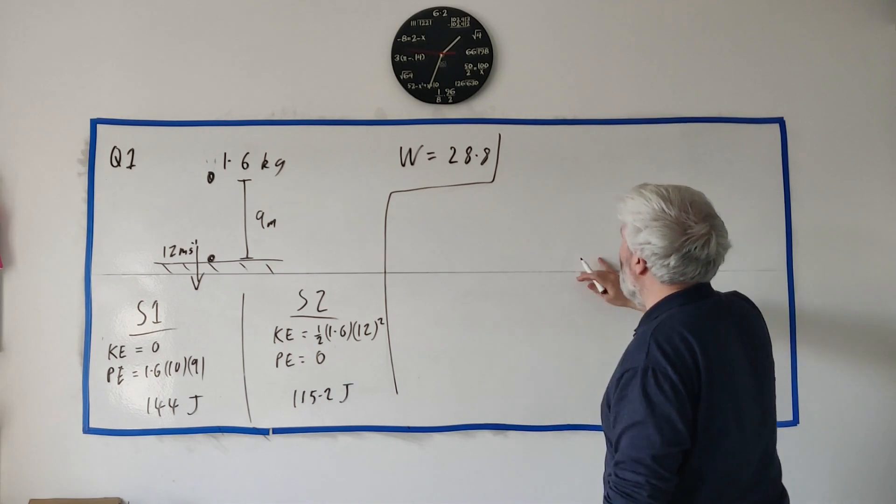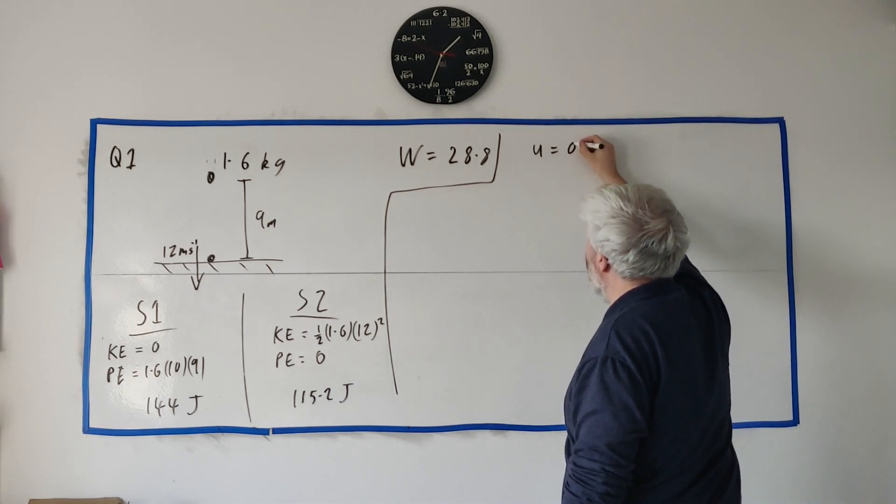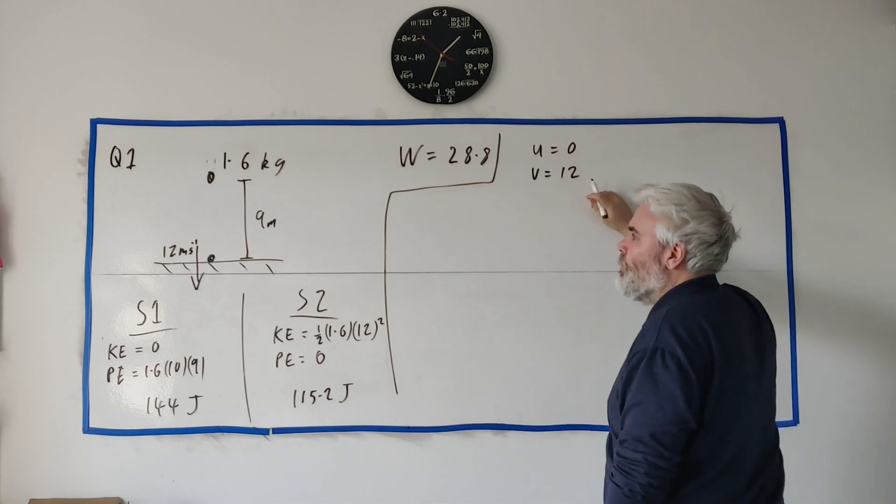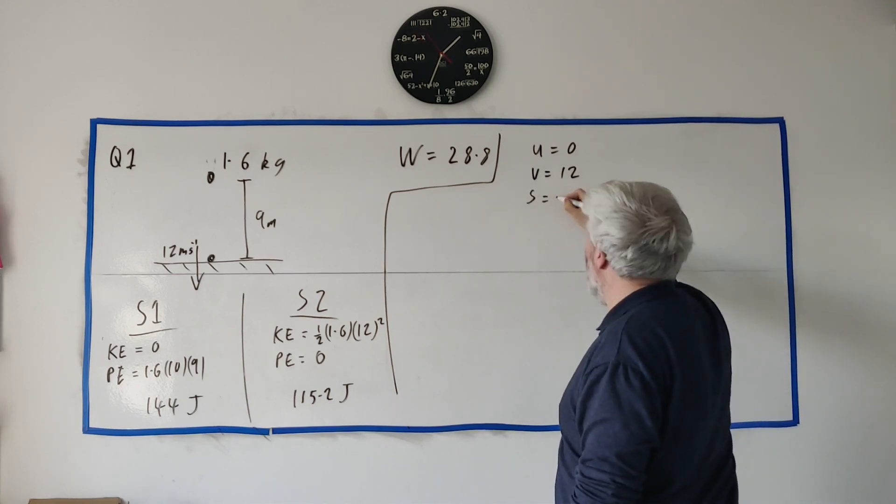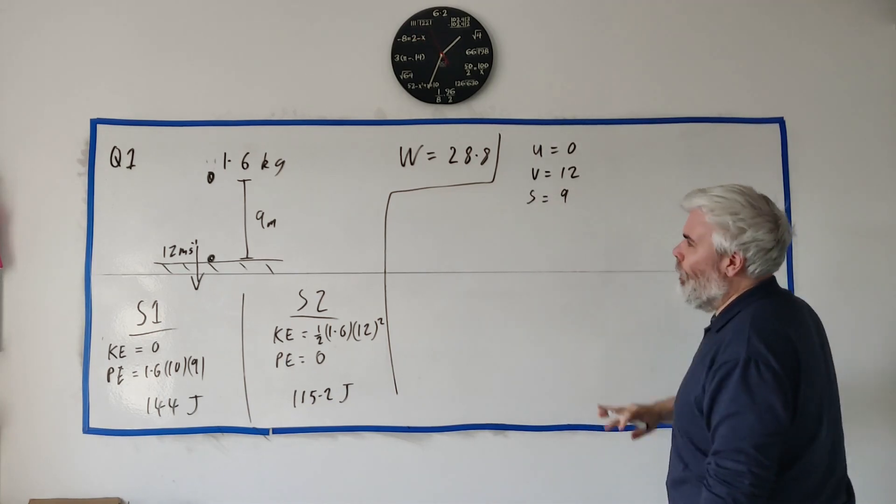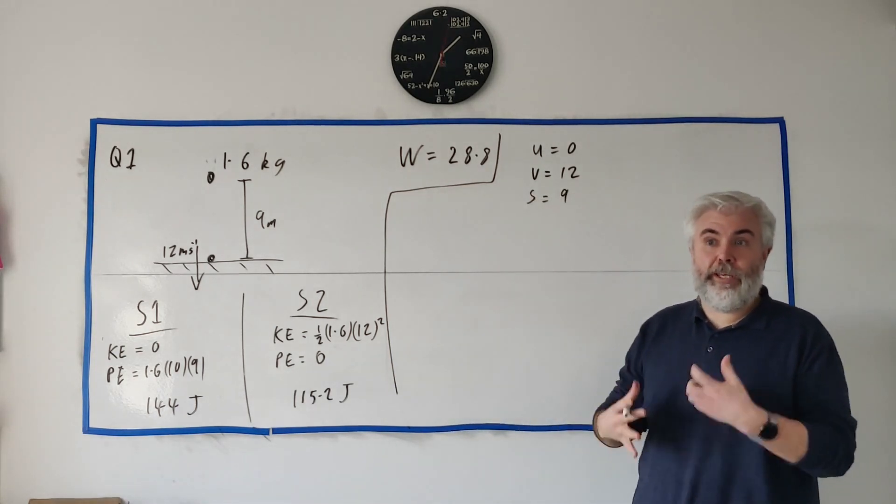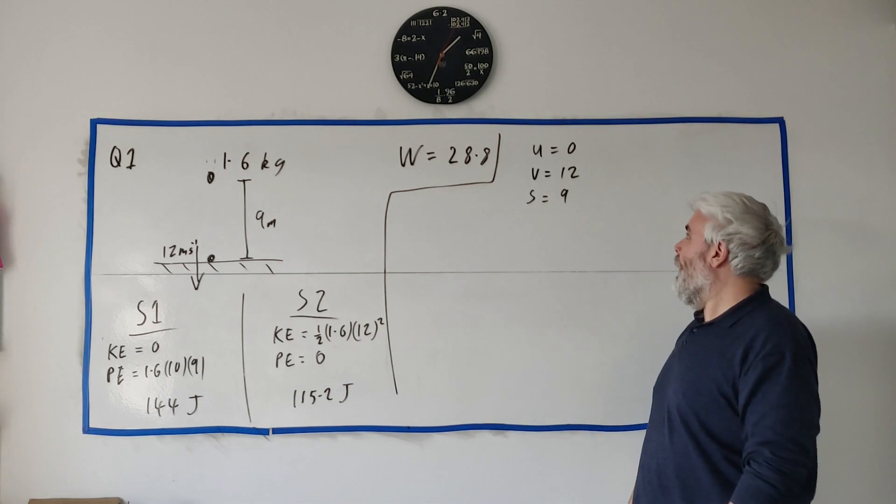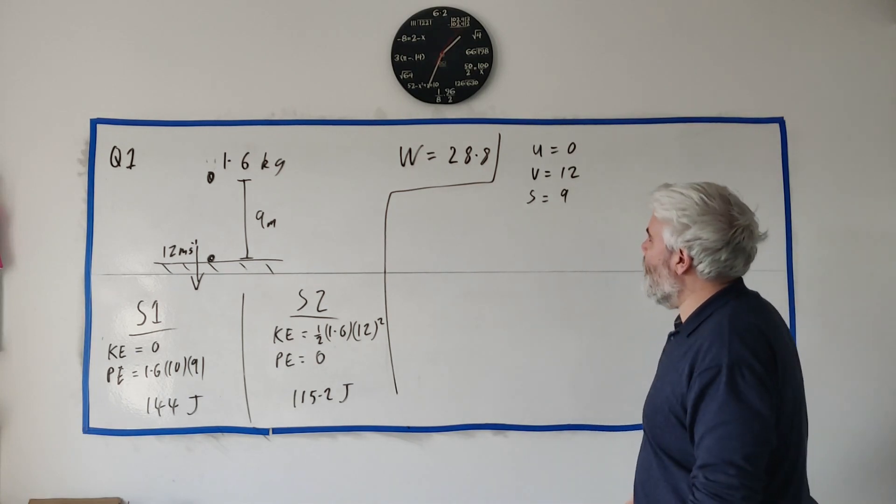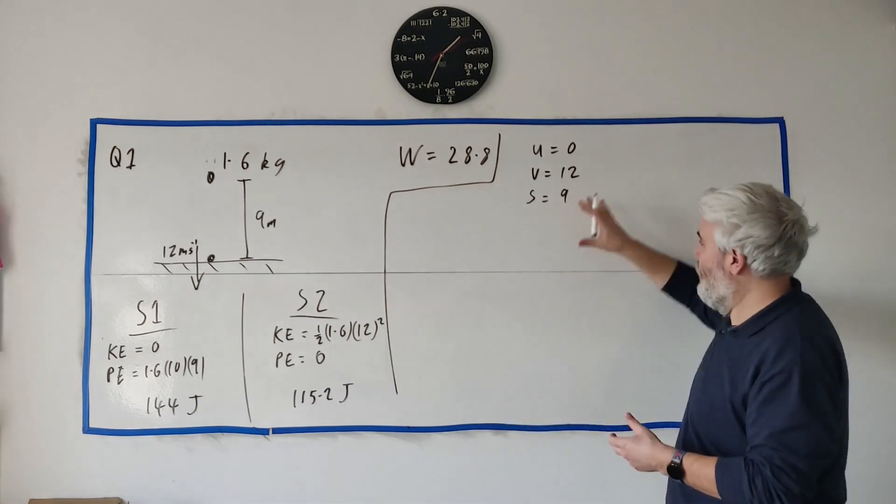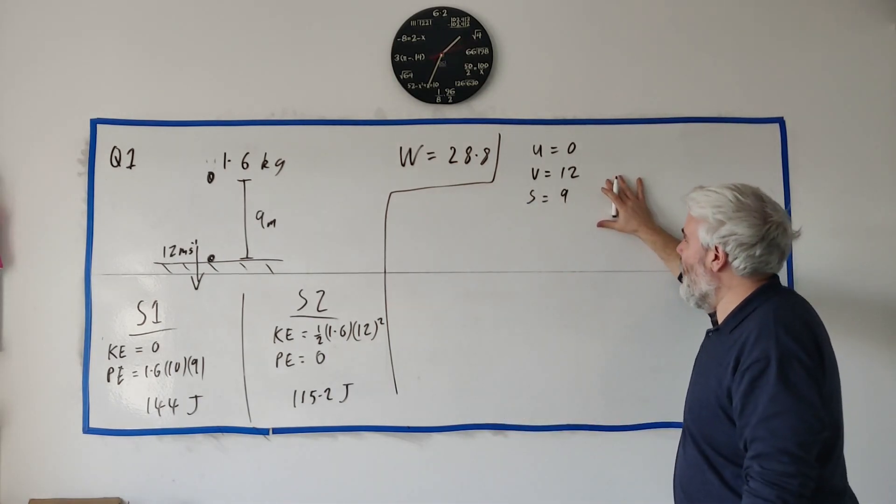You know the initial velocity, final velocity, acceleration, time and distance. We have an initial velocity of zero, a final velocity of 12 meters per second, a distance of nine, and we don't have a time and we don't have an acceleration. Still we have three which usually means we can solve.